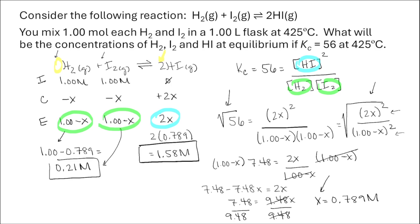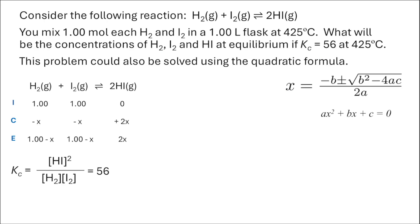This problem worked out nicely because both the numerator and denominator were perfect squares, allowing us to take the square root. If you don't have two terms that are both squared on top and bottom, that makes it more complicated — but not impossible. We can also solve these problems using the quadratic formula. I've included the general quadratic expression on this slide, where we plug in the values a, b, and c.